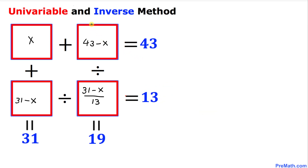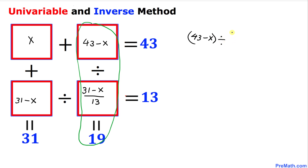For the final step, we focus on the last column. We have 43 minus x divided by (31 minus x)/13, and this should equal 19.